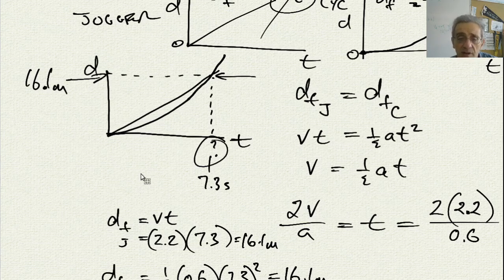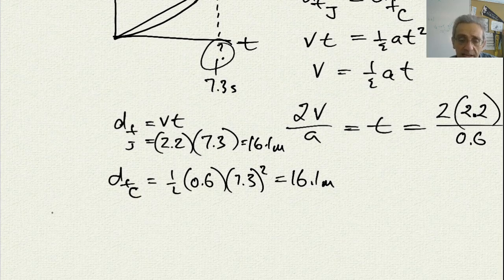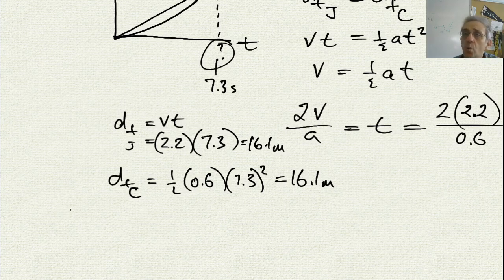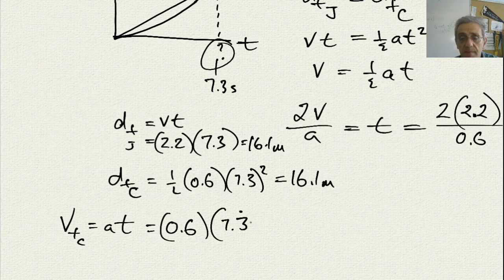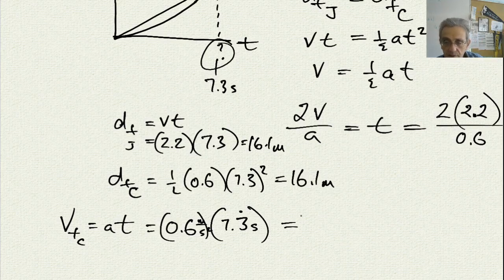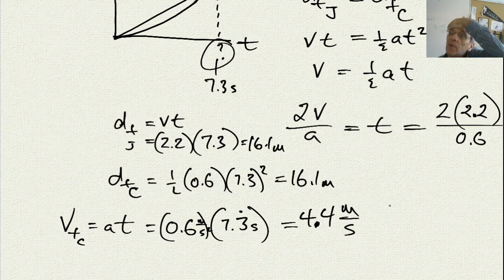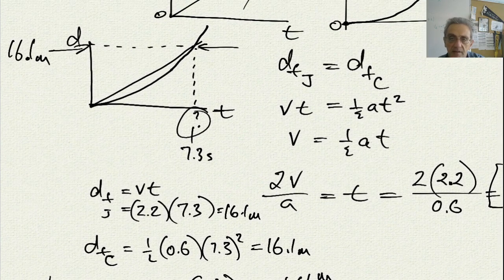Another really interesting point about this is what is the velocity of the cyclist when they overtake the jogger? If we think about that, the final velocity of the cyclist, they're accelerating at 0.6 meters per second squared. If we multiply that by 7.3 seconds, we're going to end up getting 4.4 meters per second, which interestingly is actually double the speed of the jogger at that point there.